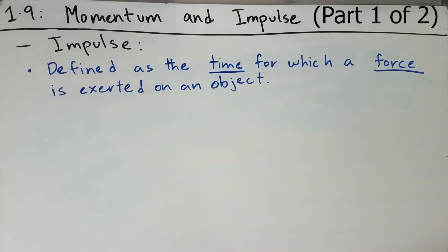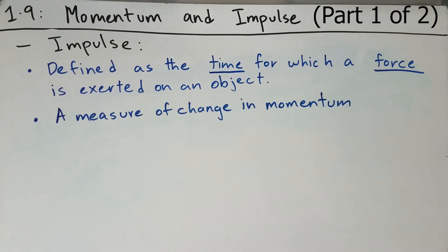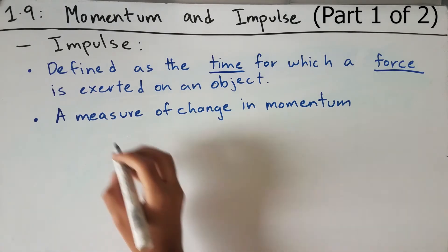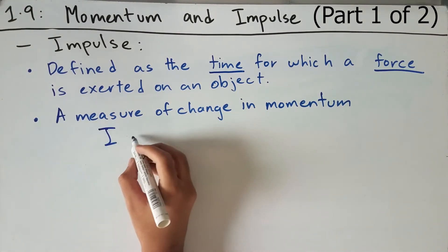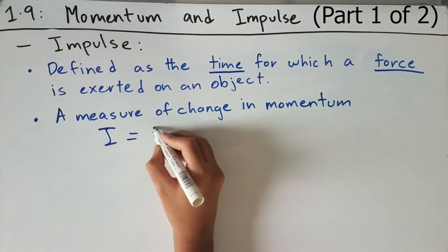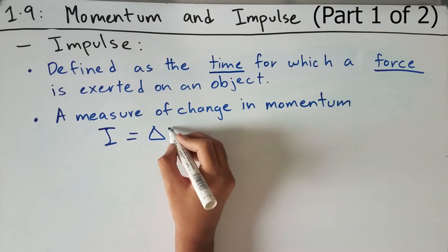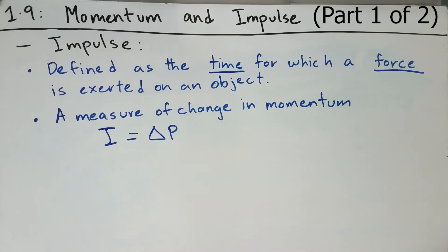Now this isn't the only definition for impulse. Impulse is also a measure of the change in momentum of an object. In mathematical terms, this means that I, the impulse of the object, is equal to the change in momentum, delta p, of the object.